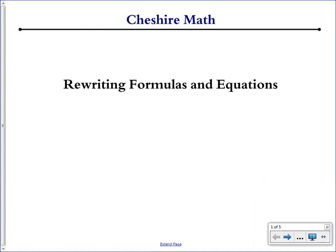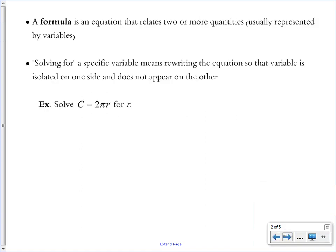This video is about rewriting formulas and equations. A formula is an equation that relates two or more quantities, usually represented by variables. You've probably used formulas before, especially in geometry when you have to do things like finding the area or circumference of a circle. Solving for a specific variable means rewriting the equation so that the variable is isolated on one side and doesn't appear on the other.